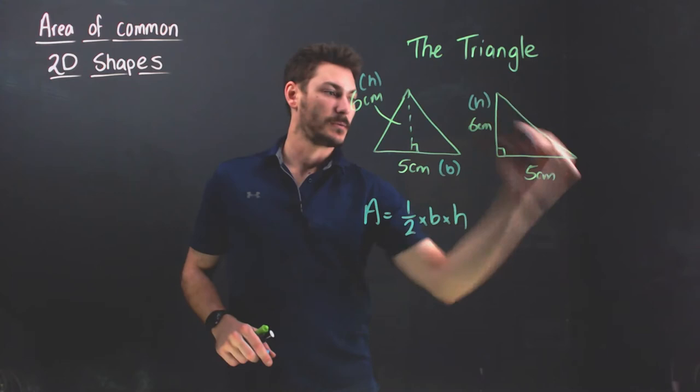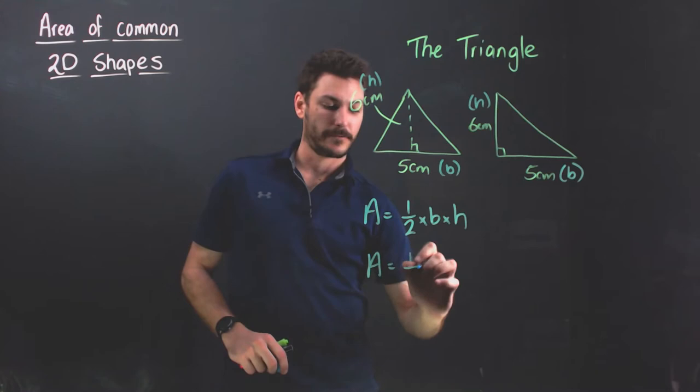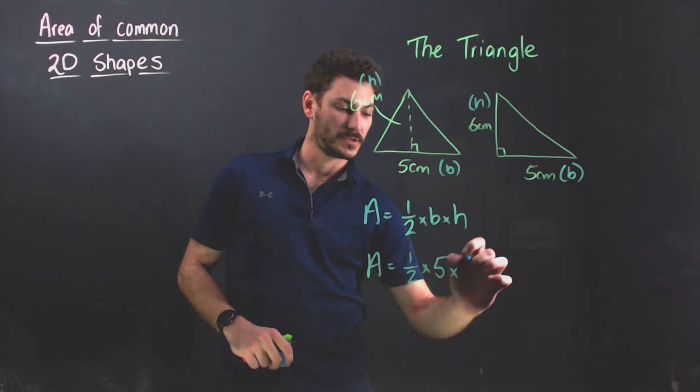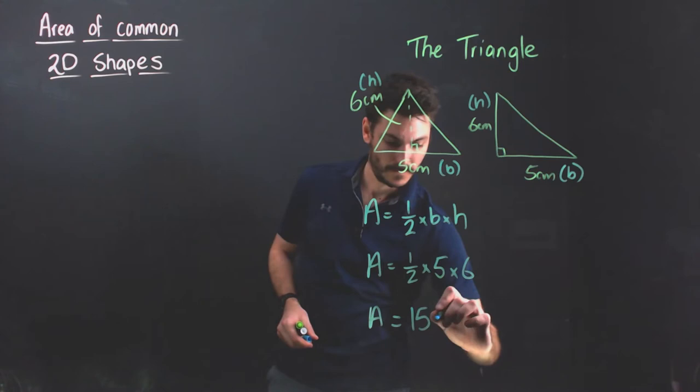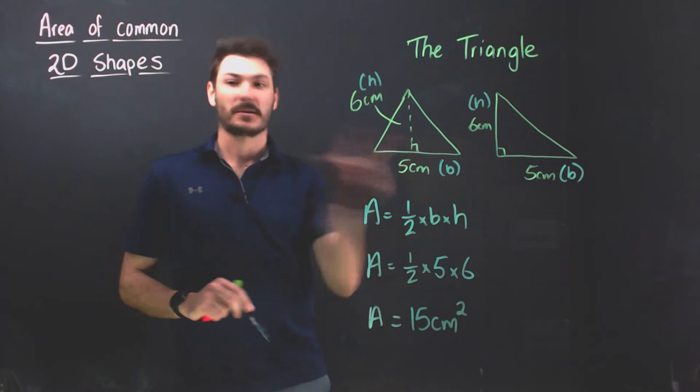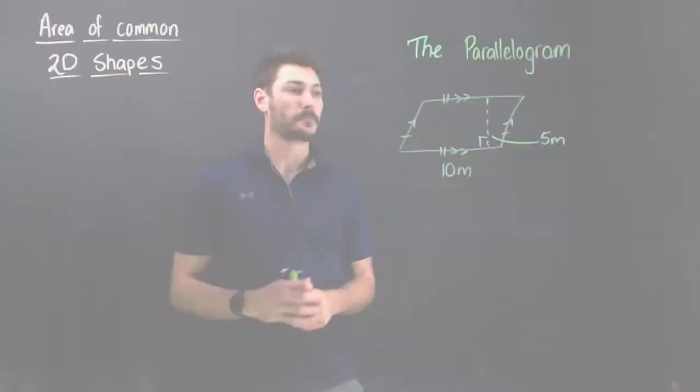Area equals one half times the base which is five times the height which is six. The area equals—I have five times six is 30, 30 times a half is just 15. Again I have centimeters because that's my units and I have squared because I'm working in two dimensions. If you're doing volume you would use three up here to represent volume because it is a three-dimensional unit of measurement.